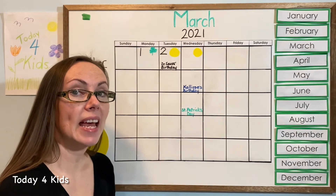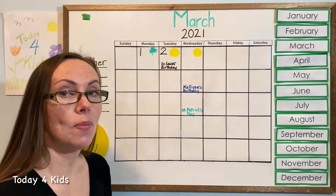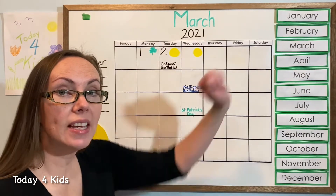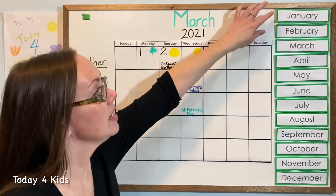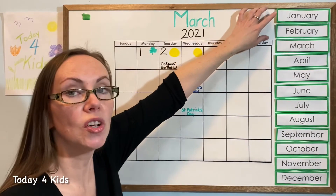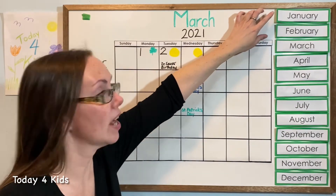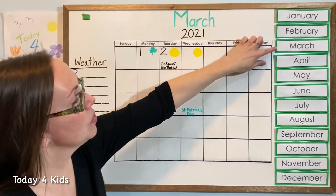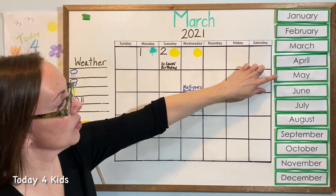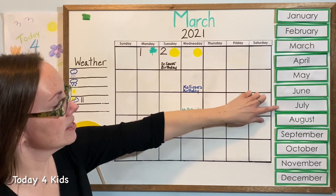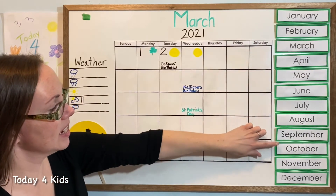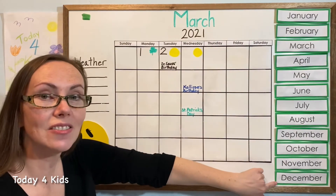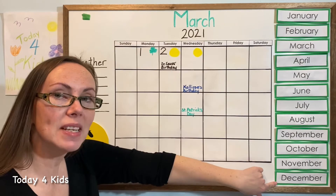Let's start by counting out how many months we have in the year. Are you ready? Count with me — even if you don't know all your numbers yet, we can still count together and practice. One, two, three, four, five, six, seven, eight, nine, ten, eleven, twelve. Twelve months in the year. Are you ready to practice their names? Let's go back up to the top. Sing it with me.